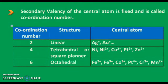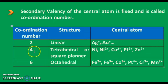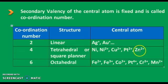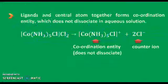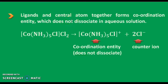The central atom has a fixed secondary valency which is called the coordination number. For Co, it is 2, 4, or 6. If the coordination number is 2, the structure is linear — examples are Ag⁺ and Au⁺. If the coordination number is 4, the structure is tetrahedral or square planar — examples include Ni²⁺, Cu²⁺, Pt²⁺, Zn²⁺. If the coordination number is 6, examples of central atoms include Fe²⁺, Fe³⁺, Co³⁺, Pt⁴⁺, Cr³⁺, Mn²⁺. The ligands and the central atom together form the coordination entity.